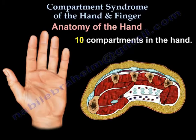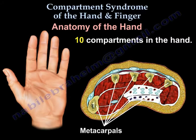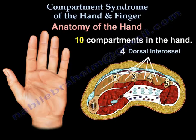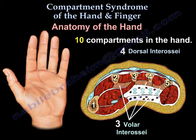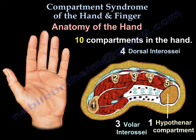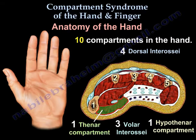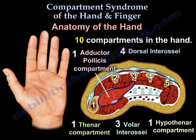Anatomy of the hand. The hand has 10 muscle compartments. Here you can see the metacarpals: 4 dorsal interossei, 3 volar interossei, 1 hypothenar compartment, 1 thenar compartment, and 1 adductor pollicis compartment.